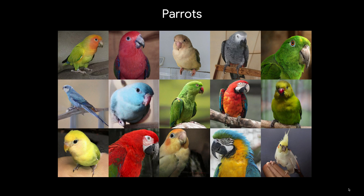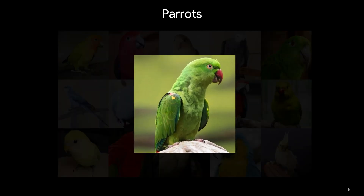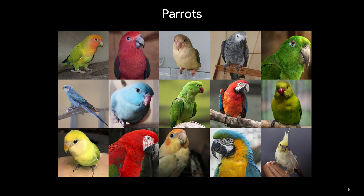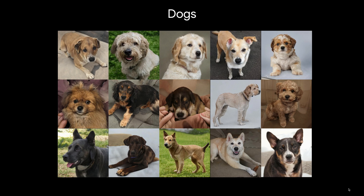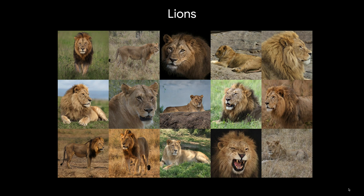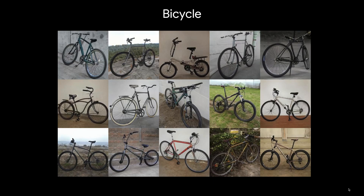We have successfully applied our approach to many different, new, challenging, and diverse domains collected from the internet. Here are images generated by our method for the parrot domain — note the high quality image generation and how the unique color combinations of the parrots are captured well by our multimodal approach. Here are elephant results, dogs, lions, bicycles, and more.